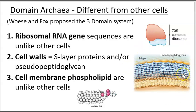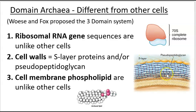We can also look at the archaea cell wall, which is made up of proteins and can also have pseudopeptidoglycan. Rather than peptidoglycan with NAG and NAM chains, pseudopeptidoglycan has NAG and NAT sugar chains — the NAM is replaced by the NAT molecule — also held together by peptide bridges.